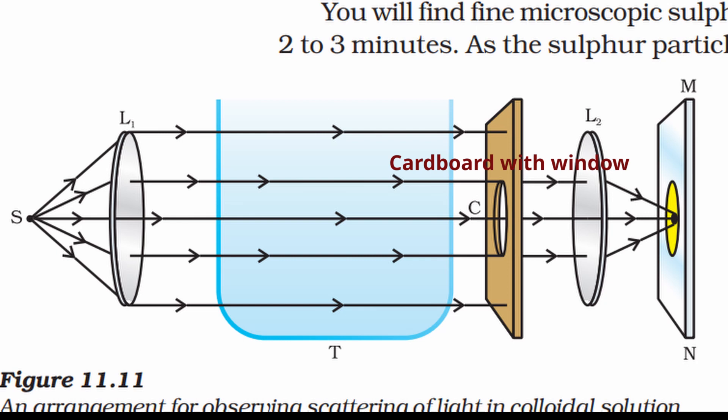We have made a slit in cardboard so that a little light can pass. Parallel beams can cross it. Then we have focused it by placing a screen at the focus of lens 2. Then we will see a spot there.